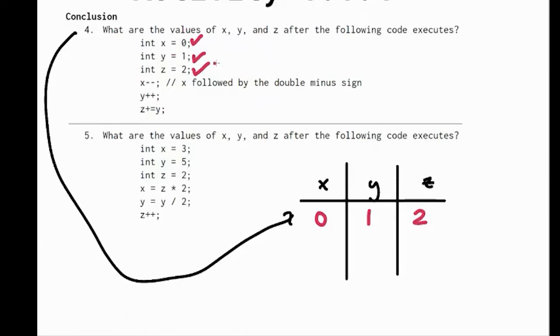The next one, it says x minus minus, so we're just going to be minusing 1 from what x already is. So let me do a different color here. So then that's going to be negative 1.